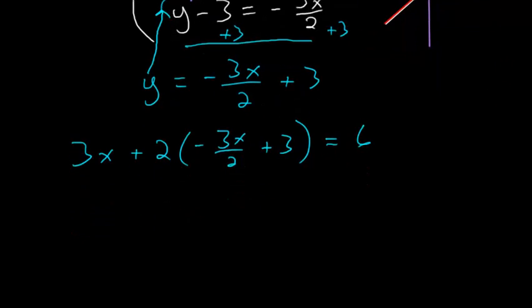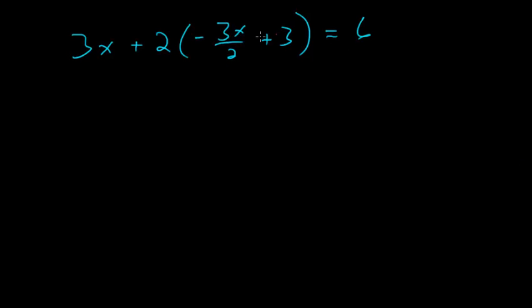And to solve this, I just need to simplify this parentheses here. So 3x plus, now I'm going to distribute the 2 to each of these. So distributing it to the first term, the 2 in the numerator and the denominator cancel. So I'm just left with minus 3x. And then the 2 distributed to the 3, I get plus 6, and this equals 6.